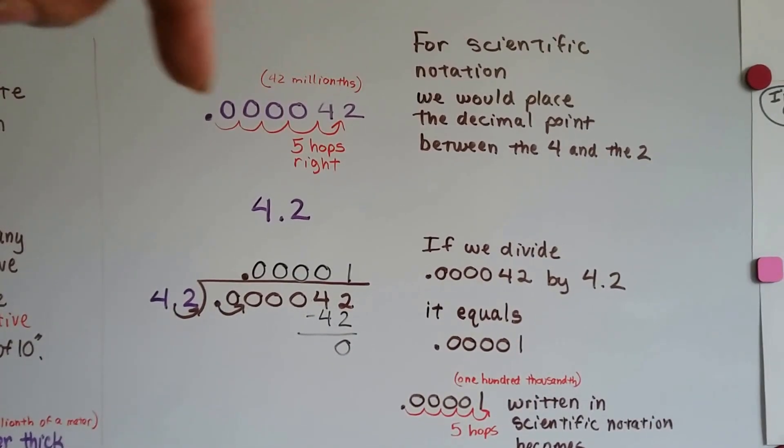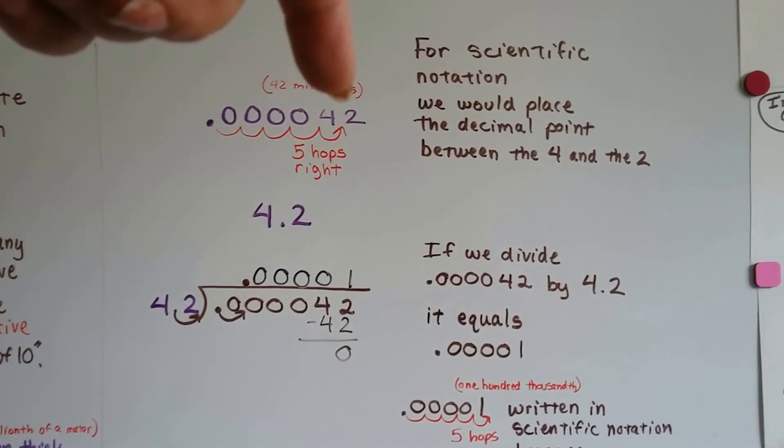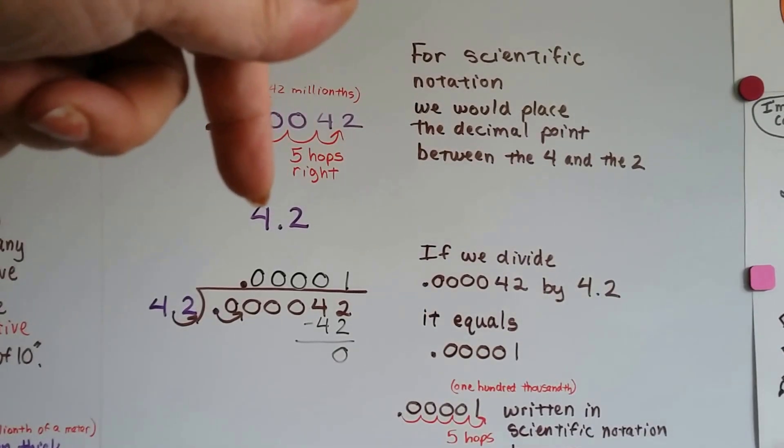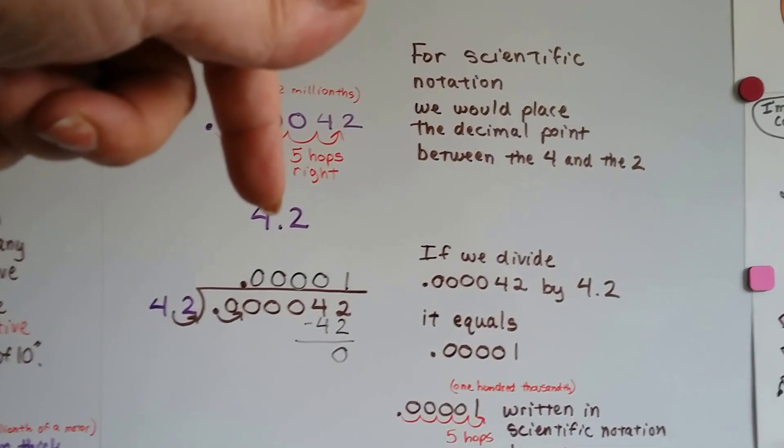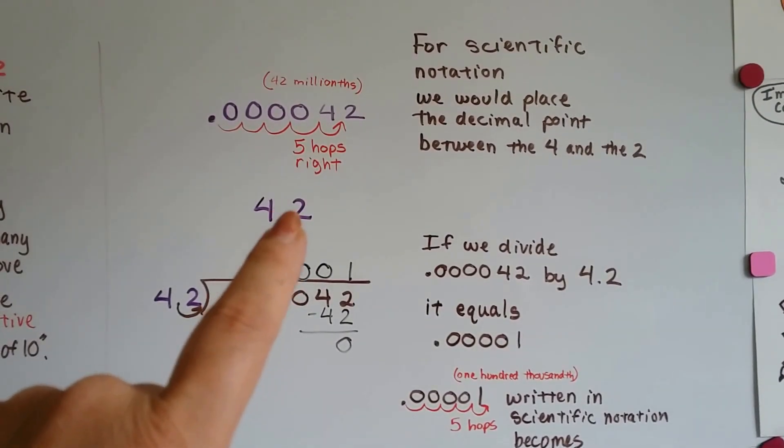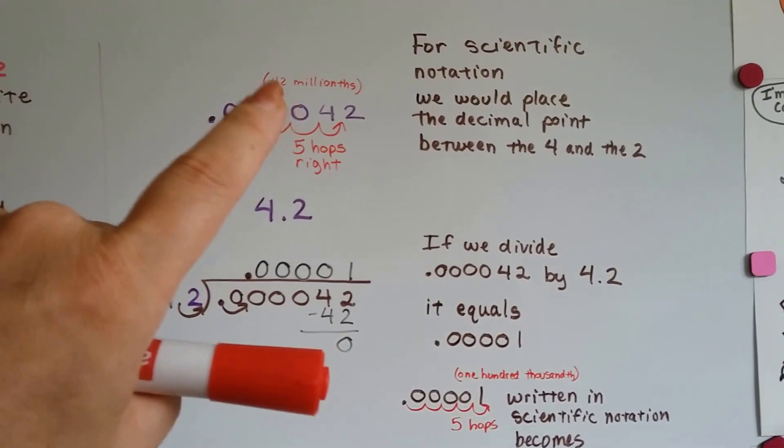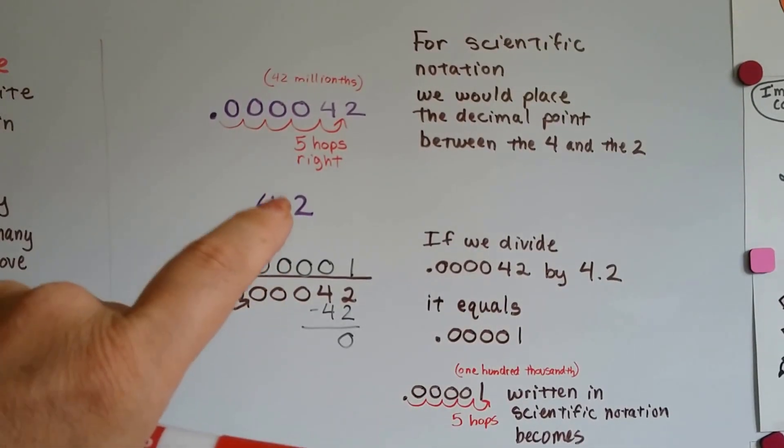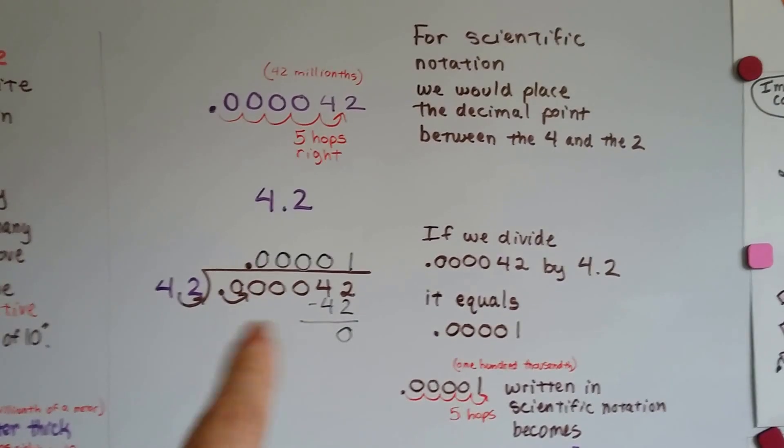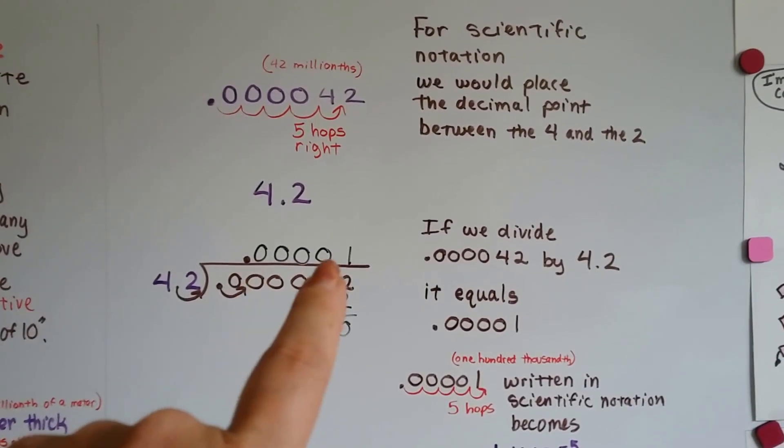It takes a number like 42 millionths, and it tells you to decide where to put the decimal point. We know we'd put it in between the 4 and the 2, like this. And then it tells us to divide this number by this number. We need to put this one into that one, like this.